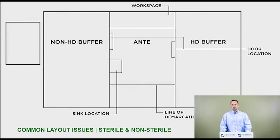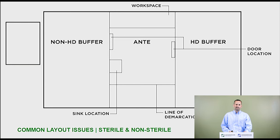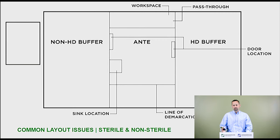Door locations: USP 800 says your sink has to be at least one meter from the HD buffer room door. It sounds easy, but some of these rooms are in really tight spaces, and it gets tough when you consider the sink has to be on the other side of the line of demarcation and a meter from this one door. Think about that early on and make sure you arrange it appropriately. Also, the primary engineering controls need to be away from the door swing — we need to make sure we don't create air patterns that would affect compounding due to door locations.